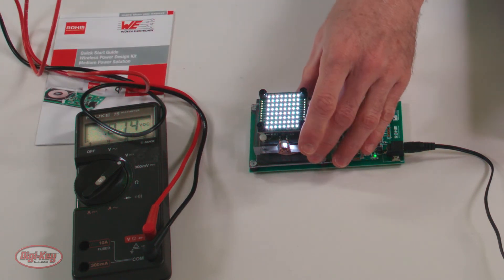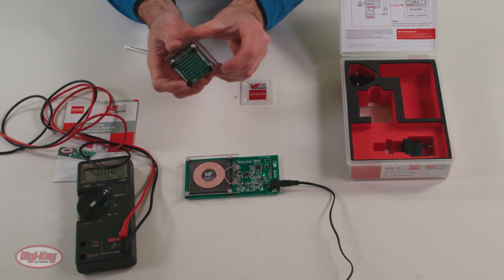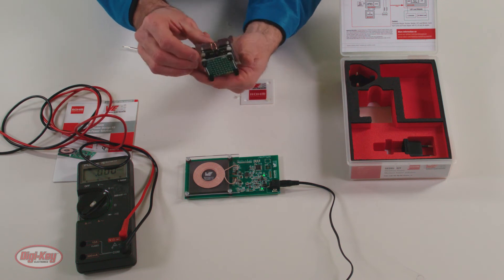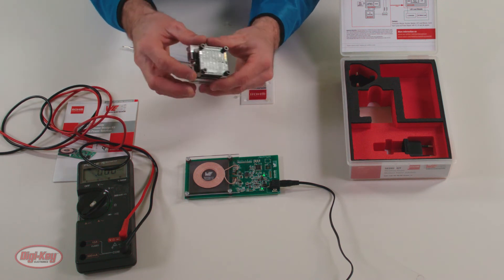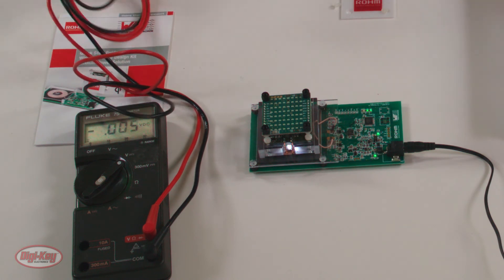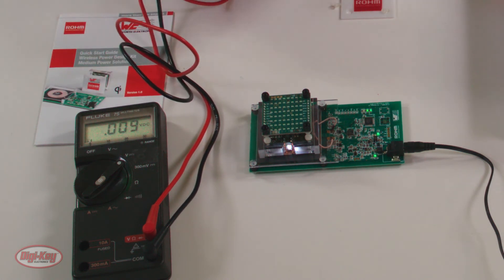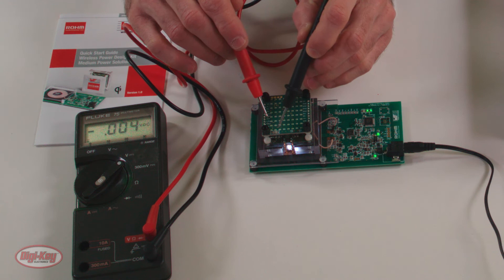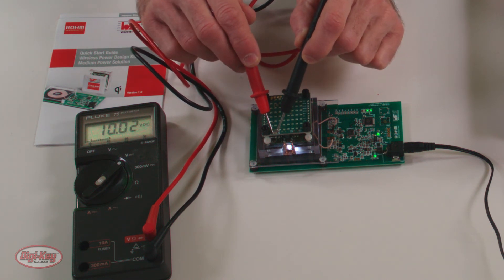You can also turn off the LEDs so you can get more power to your application, if you need more power. So again, the LEDs are obviously off, and we can take a measurement again, and we have 10 volts.